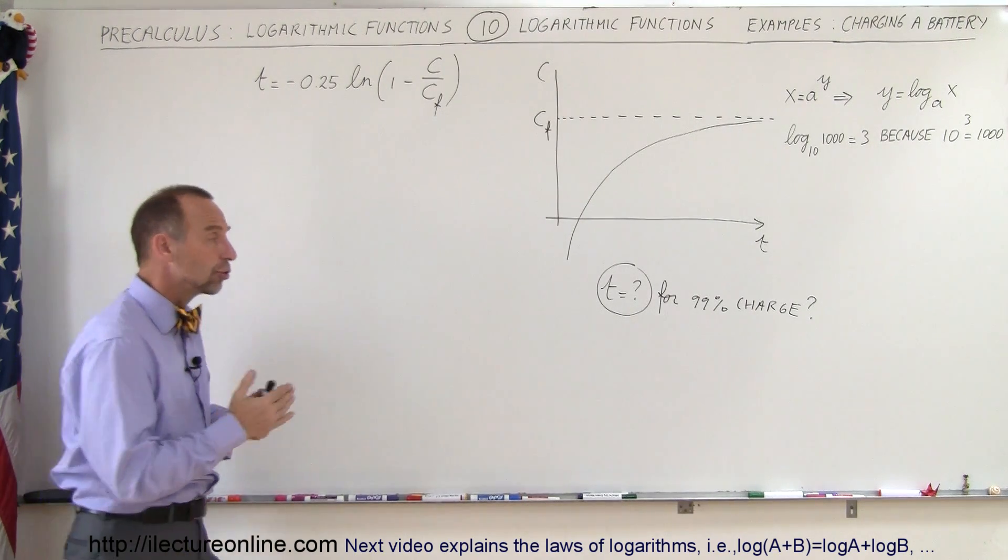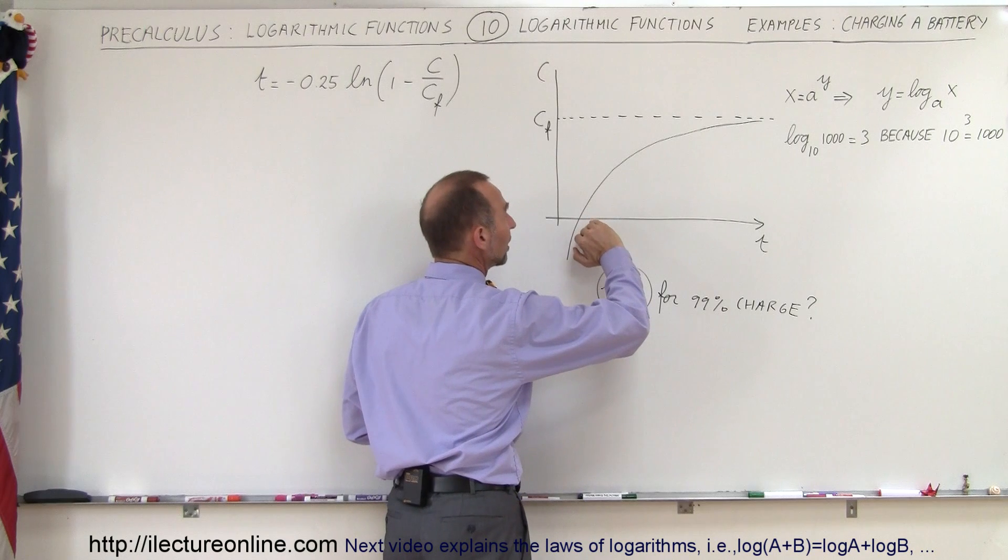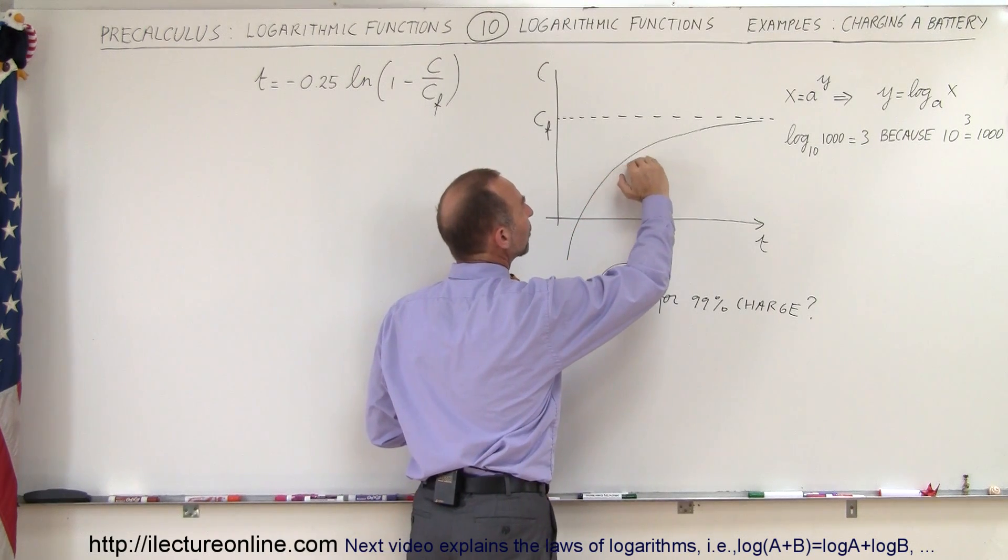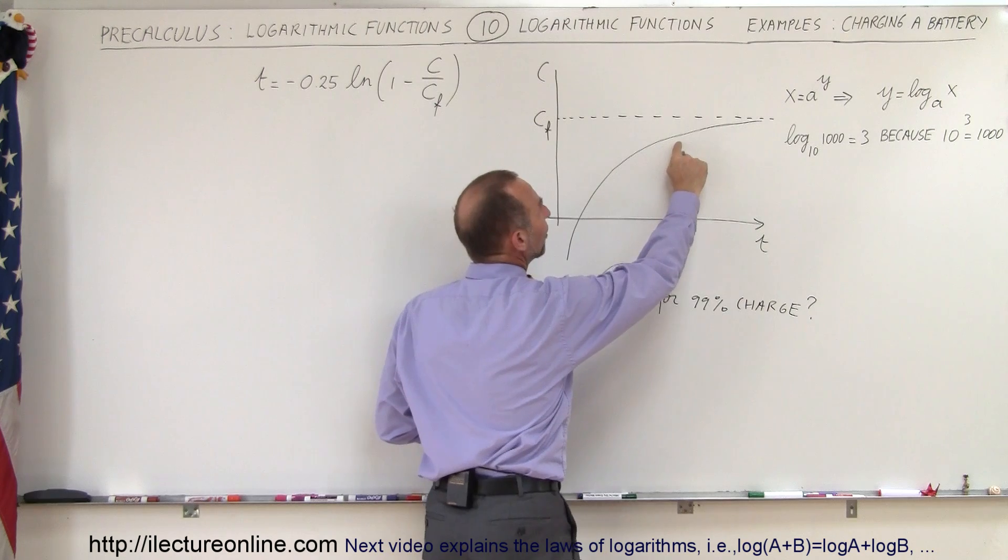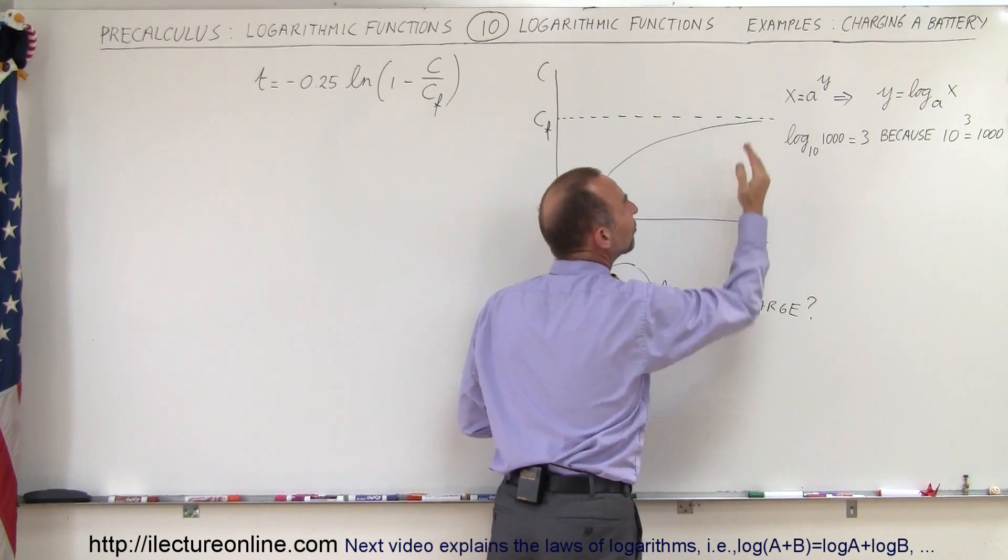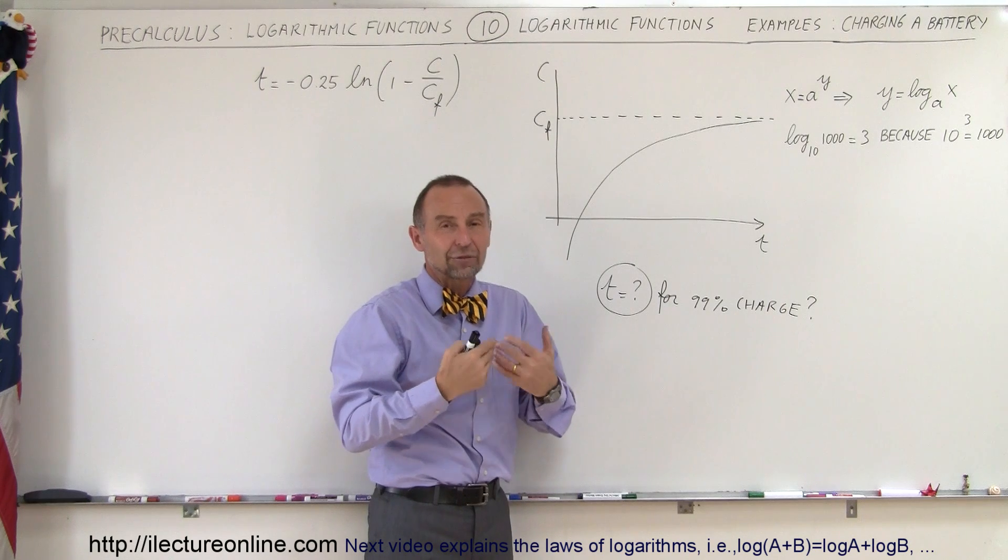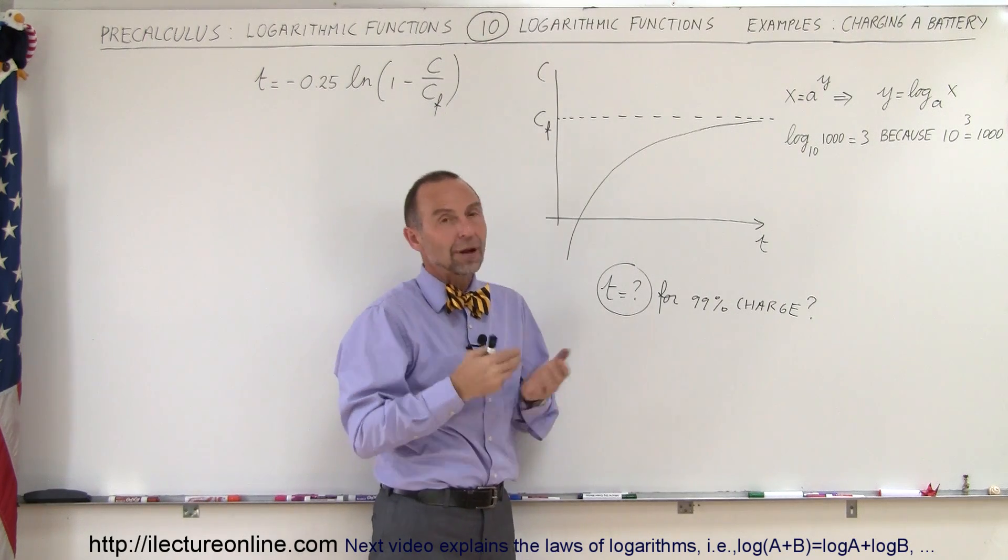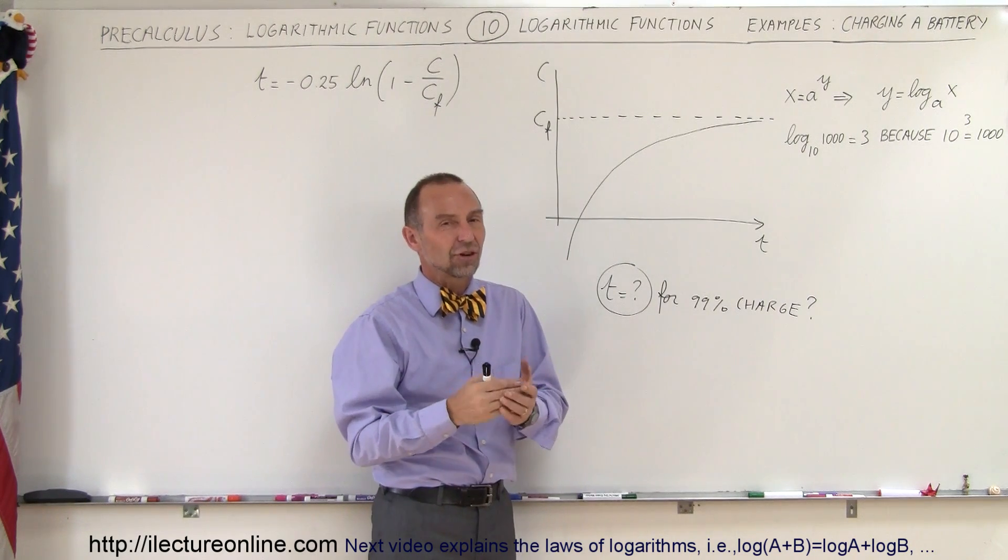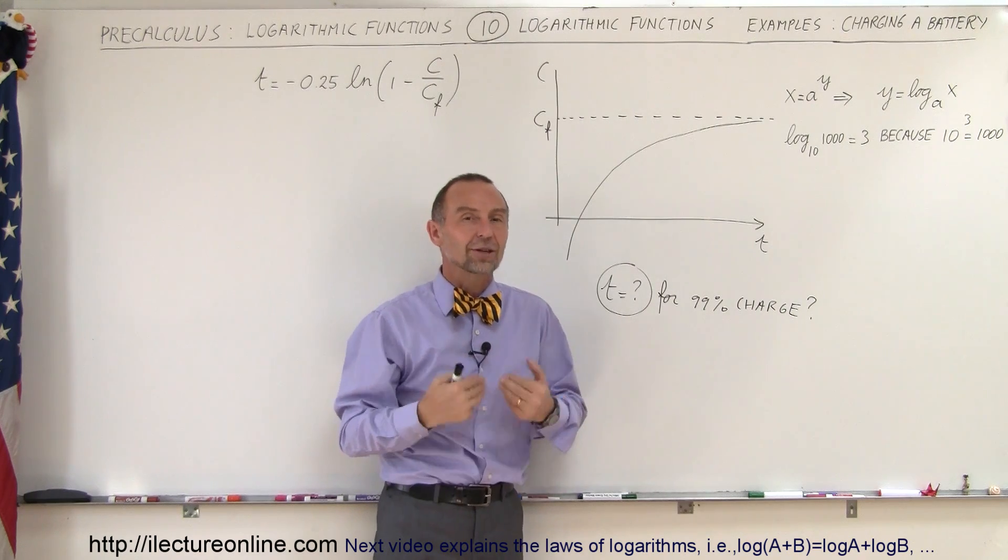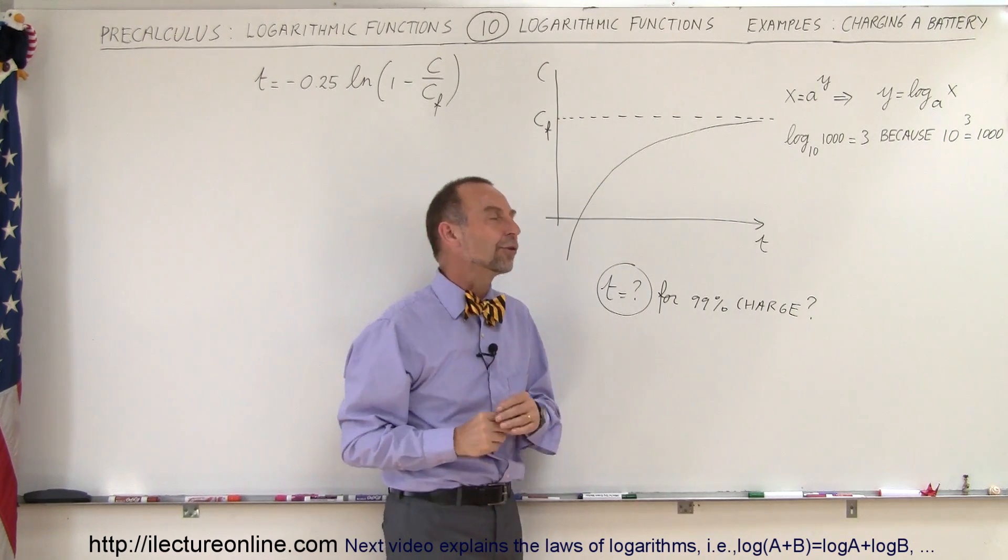Typically the charge on a battery will go as follows: initially it will charge very quickly, but then the rate at which it gets charged diminishes, and eventually it seems to almost take forever to reach 100%. In theory, it takes forever to reach that point. In practicality, when you're 99% charged, you really don't care about the other 1%; you could say your battery is fully charged.